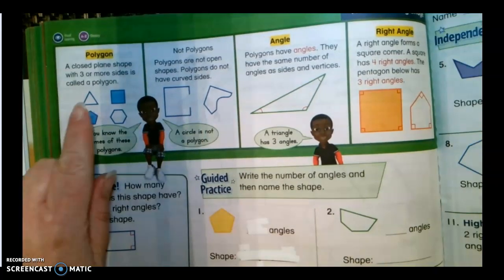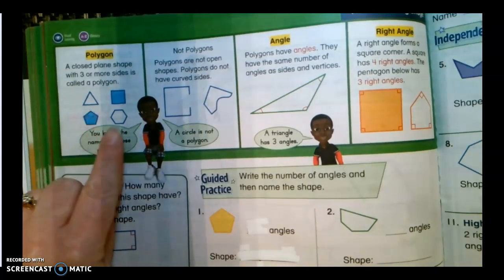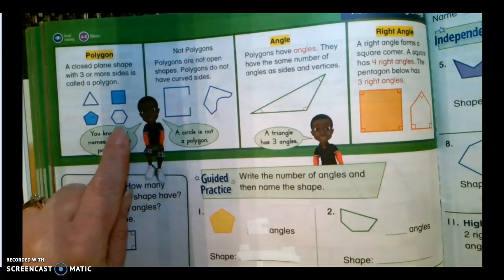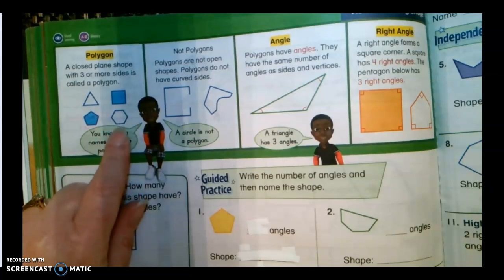A polygon is a closed shape. So if we were to put a mouse inside of this hexagon, could the mouse get out? No, he couldn't cross over these tall walls. So this is a closed shape.